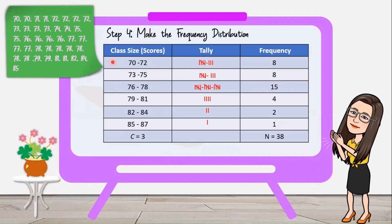Now make the frequency distribution. Our first class interval is 70 to 72, since the class size is 3. The second class interval is 73 to 75, then 76 to 78, 79 to 81, 82 to 84, and 85 to 87. In the last row, write C equals 3. After tallying, the frequencies are 8, 8, 15, 4, 2, and 1. The total n equals 38, which matches the number of observations, so there are no errors in the tally.